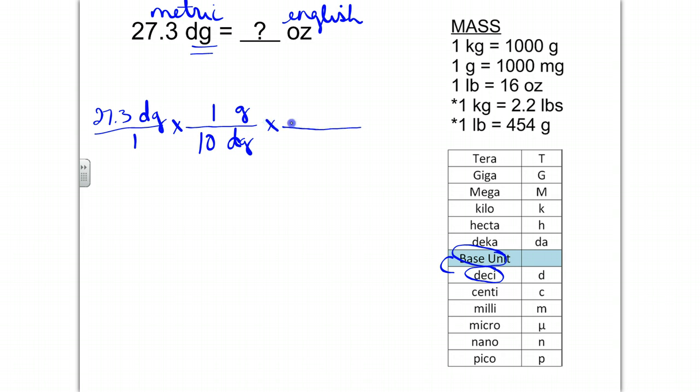Now, I've gone from decigram to gram, times draw a line, and now we're going to bring down grams. Once you get to the base, then you can finally use one of these conversion factors here in order to convert between metric and English systems. Notice we have grams here, so I can use this conversion factor directly. 454 grams equals 1 pound.